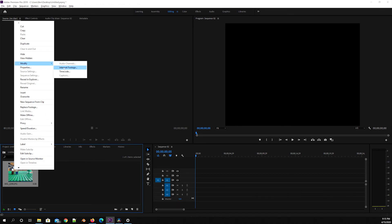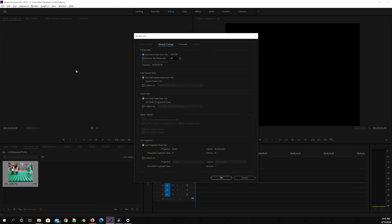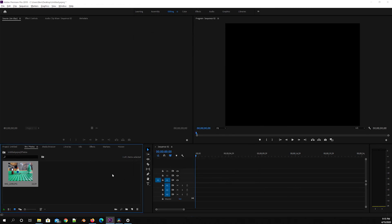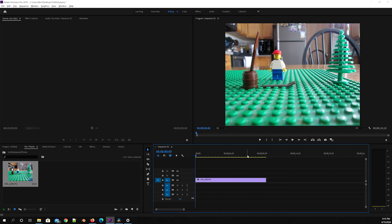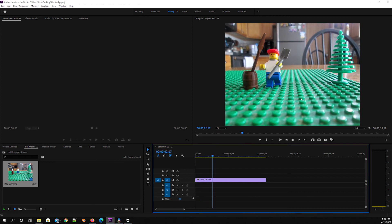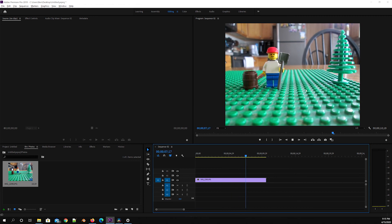So go ahead and right click and go modify, and then go interpret footage. And as you can see, it assumed 30 frames per second, which is a standard frame rate for most video. But we animated in 12 frames per second to make it easier on ourselves. So we're gonna hit OK. And now it pretends that it's 12 frames per second. And then we just go ahead and drag it on the timeline. And we hit play and there it is. Look at that. There's my goofy little animation.